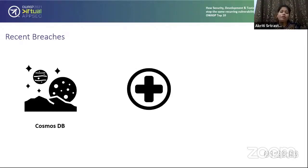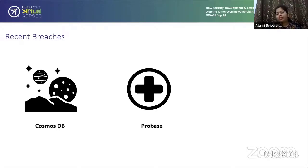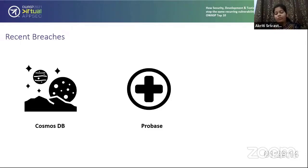Then we have this one — it looks like something related to medical. This is Probase, a UK-based firm related to medical insurance. The attackers were able to get 587,000 records, and they were sensitive records about medical checks.